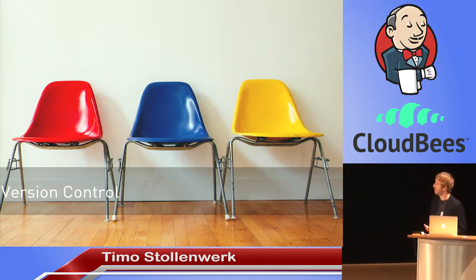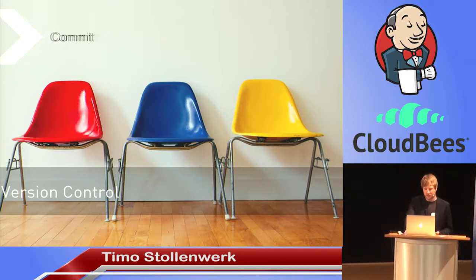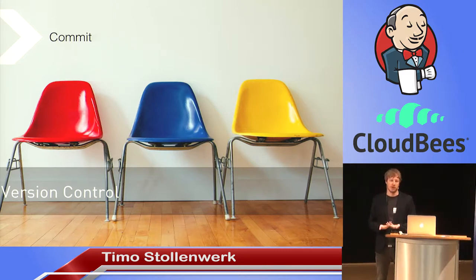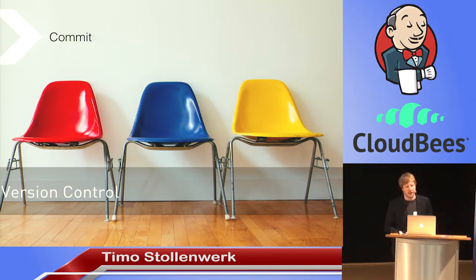Version control might seem simple, but in terms of CI it's more complex. By default Jenkins polls your version control system for changes every five minutes, which means you might get multiple commits in one build. At the end you can't really point your finger at one person and say 'you broke the build.' So it's really essential to have one build per commit, which is best practice in the Jenkins community.